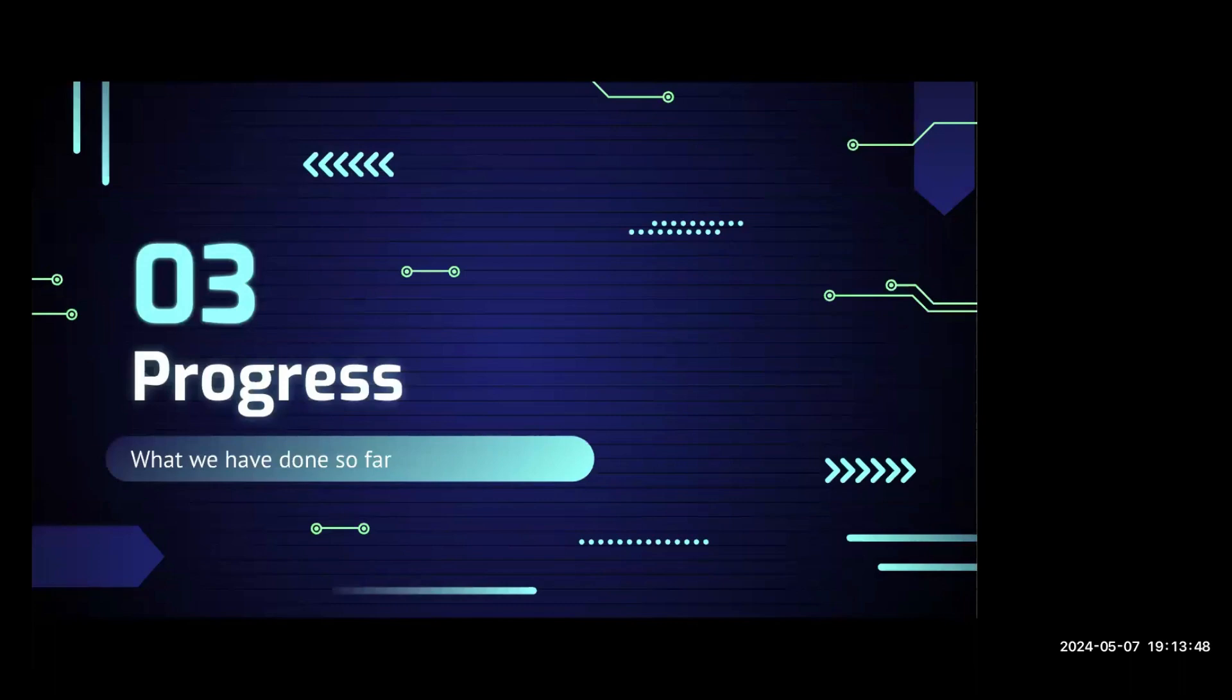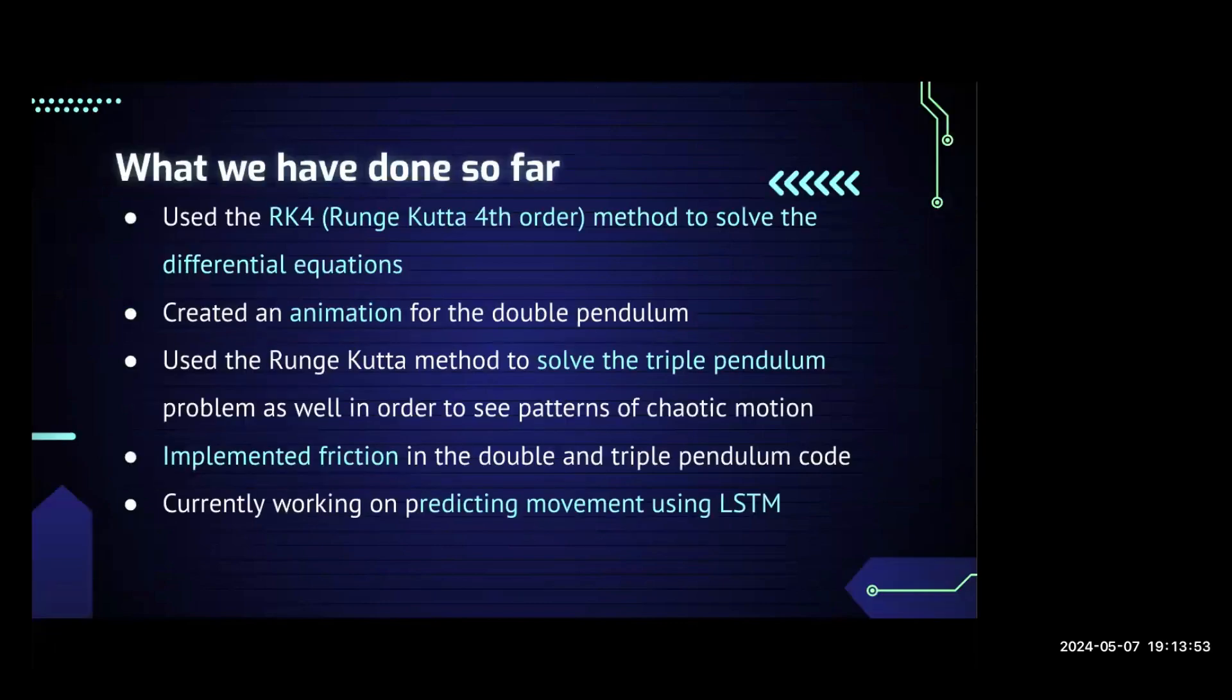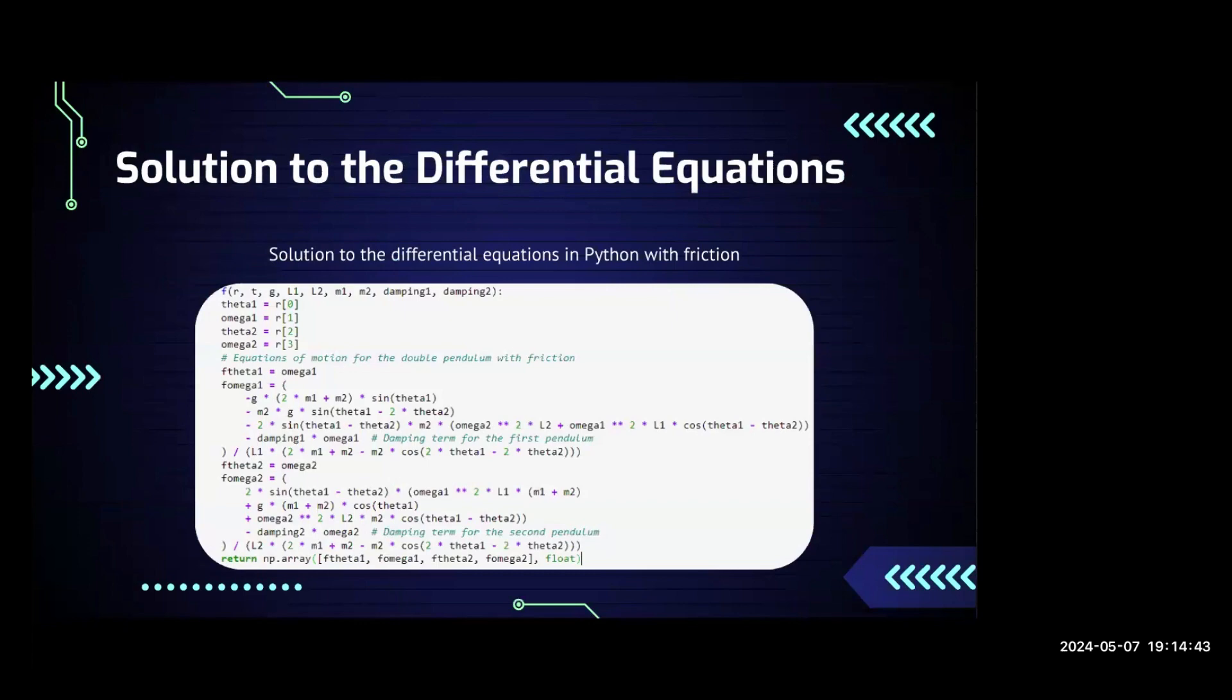Here's some progress of our research. As for what we've done so far, we've used the Runge-Kutta method to solve the differential equations that I displayed before. We've also created an animation for the double pendulum. We've used Runge-Kutta method to solve the triple pendulum in order to see the patterns of chaotic motion and how angles change based on the pendulums, and how movement changes as well. We implemented friction into the double and triple pendulum equations, so now they're part of the function of the pendulums. Lastly, we are currently working on predicting the movement using LSTM networks. This was our solution to the differential equations. It's quite lengthy, but that's how we solved it in Python.